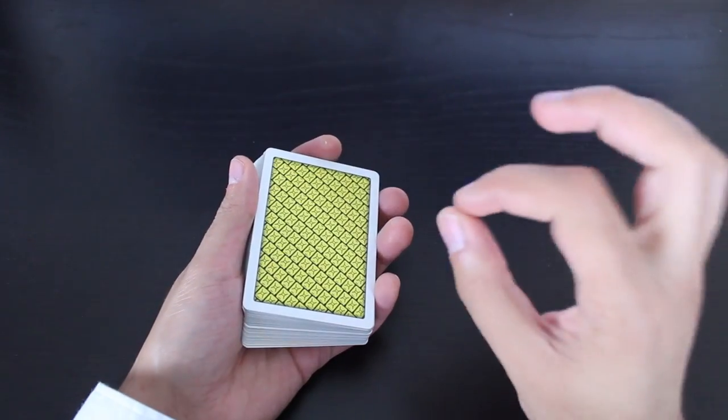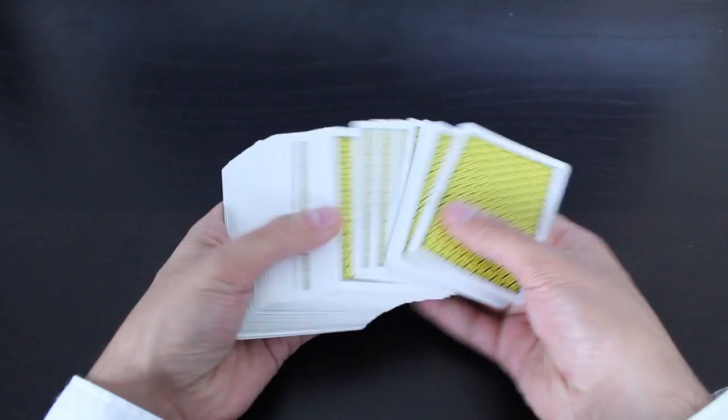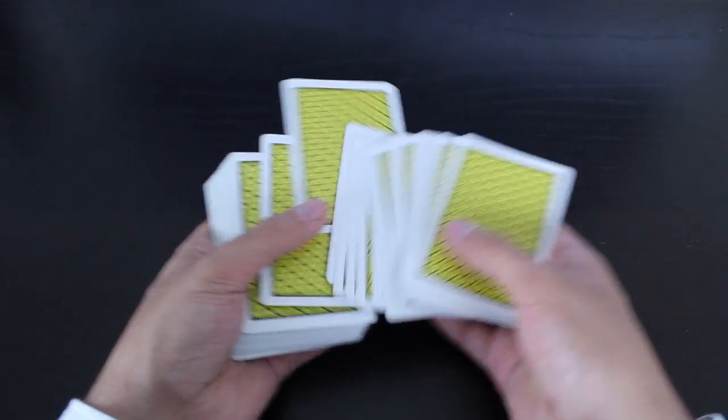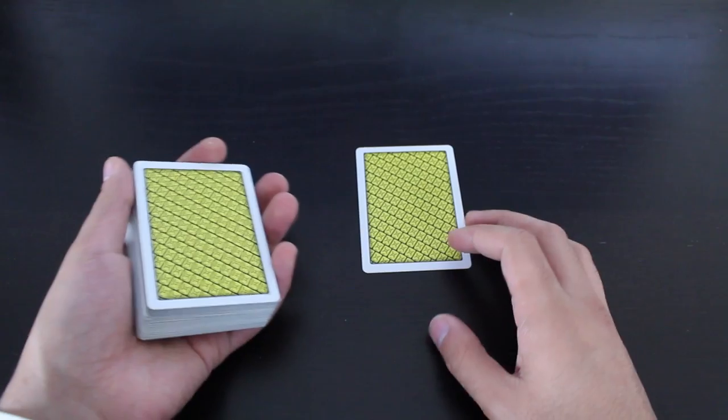Alright, in this video I'm going to show you one of the cleanest methods for controlling a card. It's a good one. So basically, I'll do a quick demonstration for you. This is the Seven of Clubs. Let's say that's the chosen card.